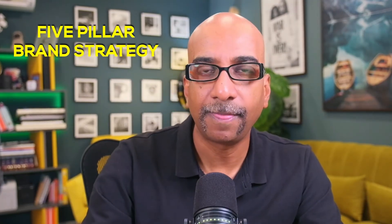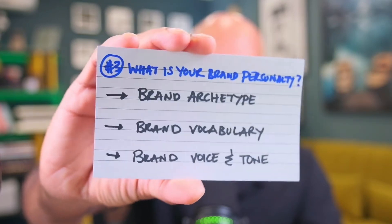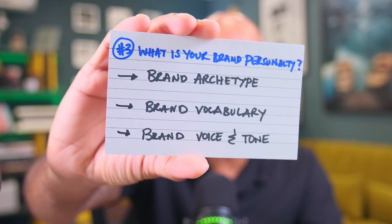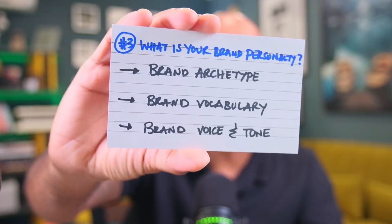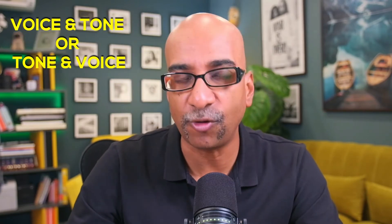I've structured these pillars into primary tasks — three primary tasks — and each primary task is broken down into three action items. For the brand personality pillar, the three primary tasks will be identifying our brand archetype, creating the brand vocabulary, and then finally creating the brand voice and tone. These three come together to make your brand personality.